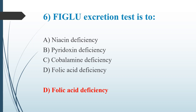FIGLU stands for formiminoglutamic acid. It is an intermediate metabolite in L-histidine catabolism, in the conversion of L-histidine to L-glutamic acid. In the presence of folic acid deficiency, FIGLU cannot be metabolized, so a large quantity is therefore excreted in the urine.